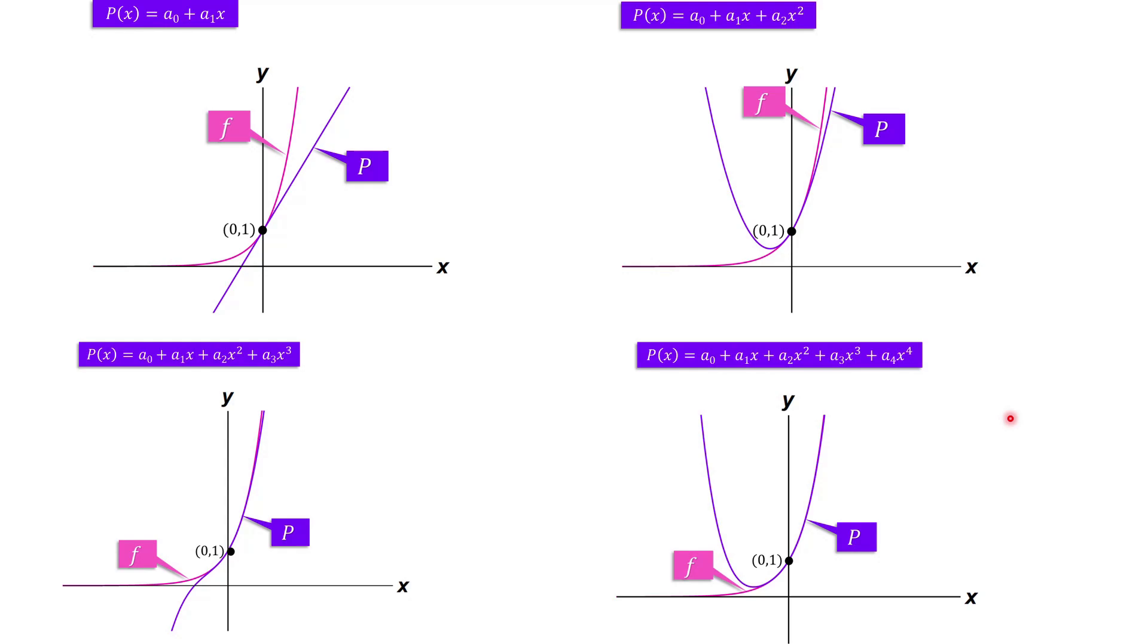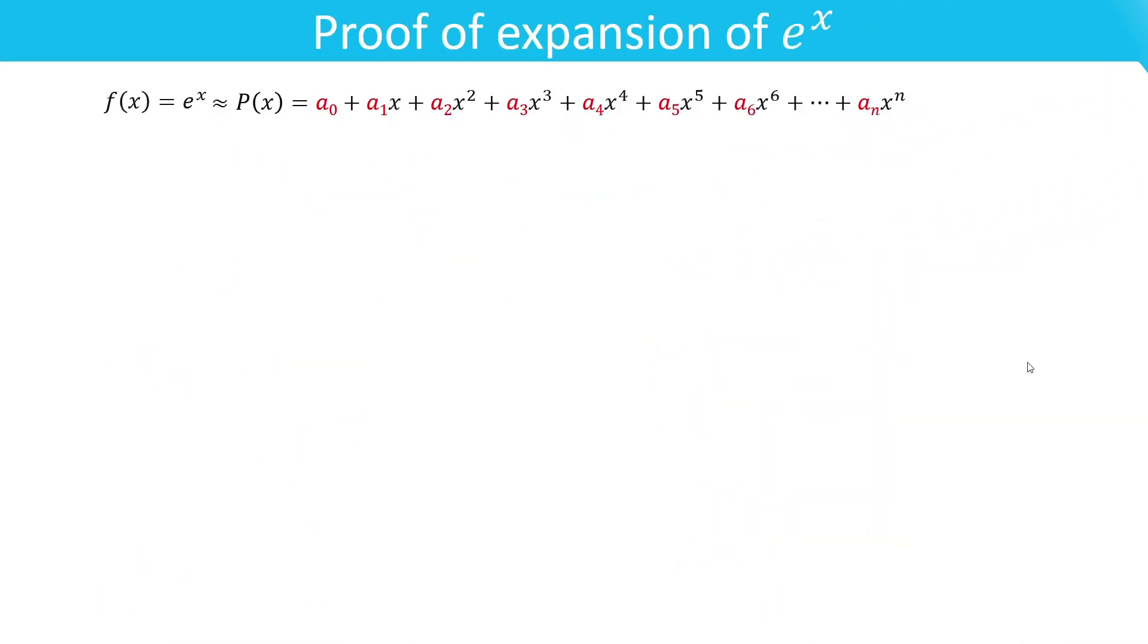That is, we get better approximation with increase of degree of the polynomial. If n tends to infinity, then we get the exact value of e^x. For now, let us consider that P(x) is an nth degree polynomial which is approximately equal to e^x.